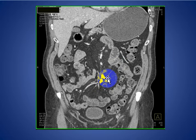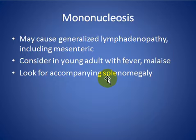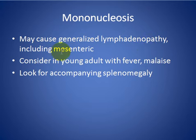Mononucleosis may cause generalized lymphadenopathy including the mesentery. Consider this diagnosis in young adults presenting with fever and malaise. Look for accompanying splenomegaly.